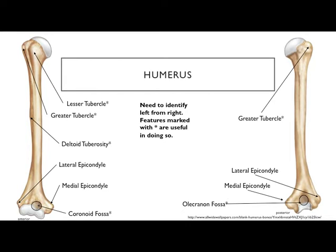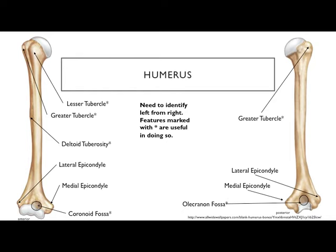The surgical neck gets its name because it's where surgeons commonly have to repair fractures. A memory trick: 'tubercle' rhymes with a word associated with the breast region, and the humerus is near that area — it's silly but helpful since we'll also see tuberosities and trochanters. These are the three T's of attachment: tubercle, tuberosity, and trochanter — all projections for muscle attachment. We'll cover those muscles next week.